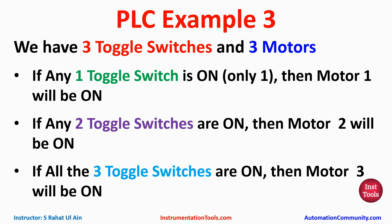If switch 1 is on and the other two switches are off, then motor 1 will be on. If switch 2 is on and the other two switches are off, then motor 1 will be on. If switch 3 is on and the other two switches are off, then motor 1 will be on. If two switches are on and the third one is off, then motor 2 will be on. And if all three switches are on, then motor 3 will be on. For this example we'll use normally open contacts and normally closed contacts.